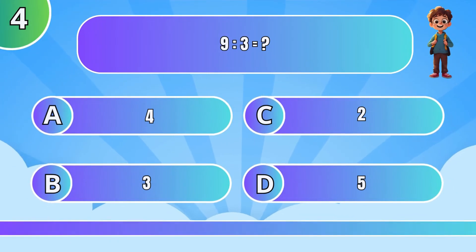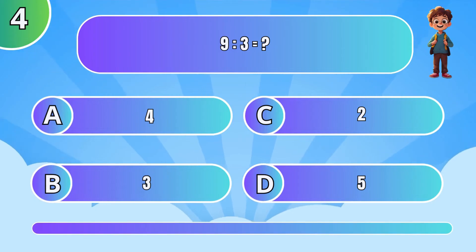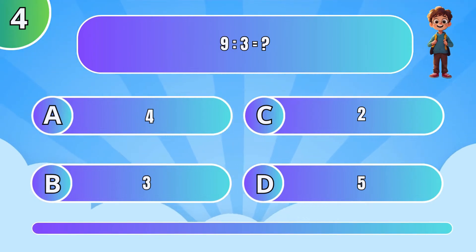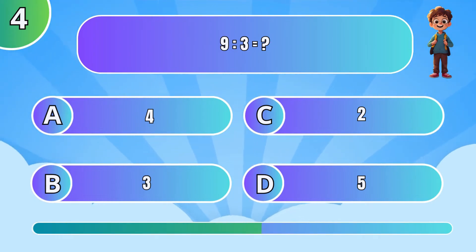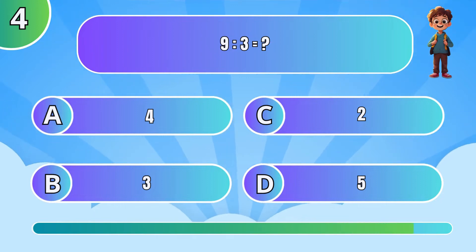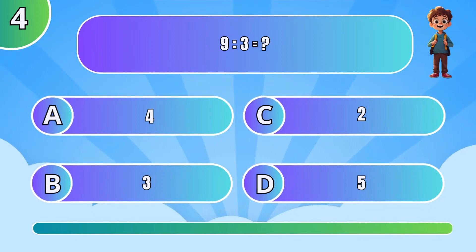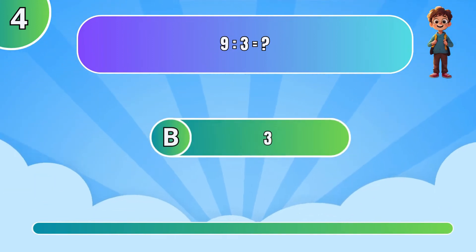What is 9 divided by 3? The answer is B, 3.